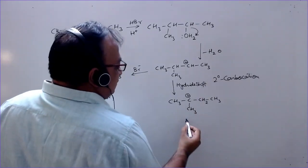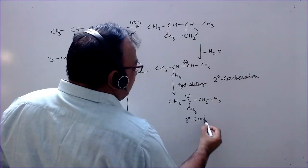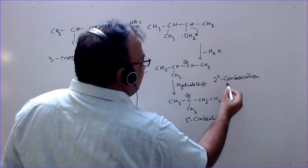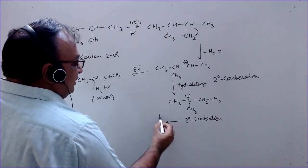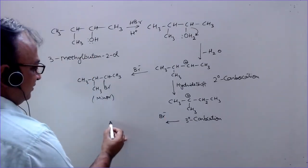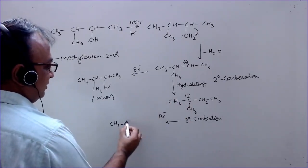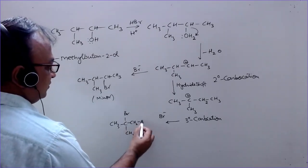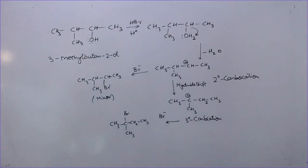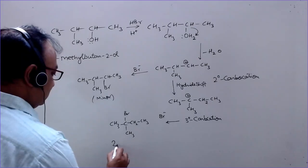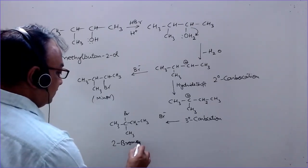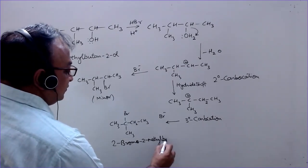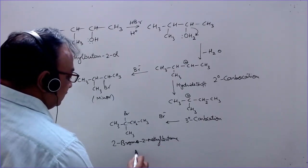So this is a tertiary carbocation which is more stable than secondary carbocation, and when this reacts with bromide, this negative charge is attached to this carbon with the positive charge. And we get this compound. So this is the major compound which is 2-bromo-2-methyl-butane, the major compound.